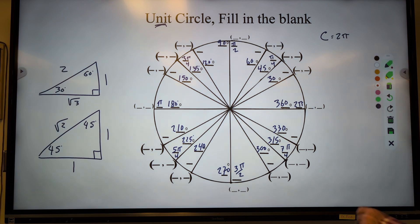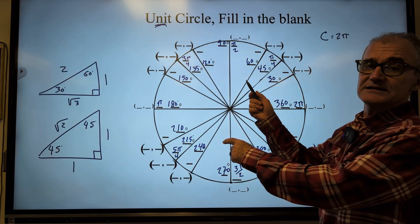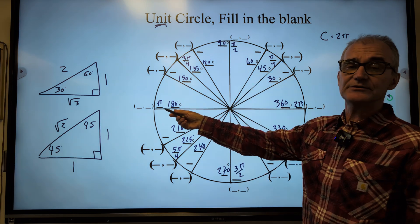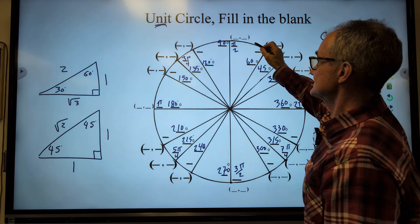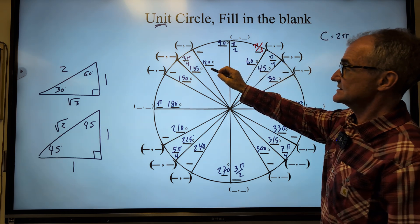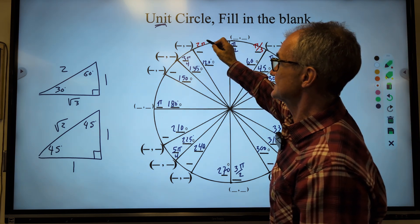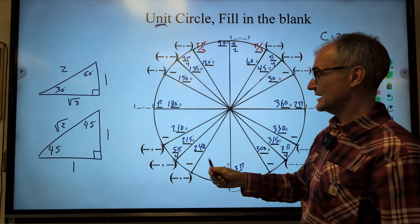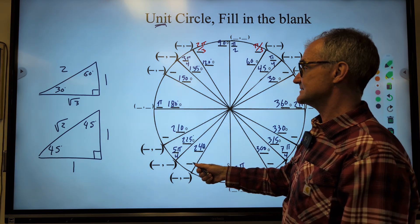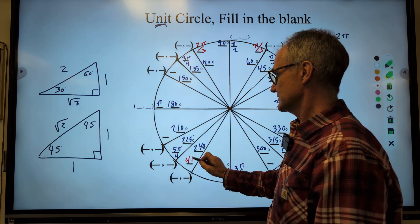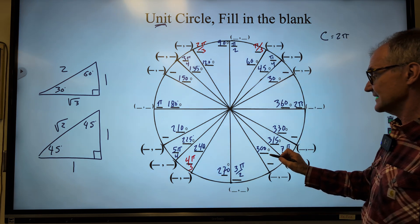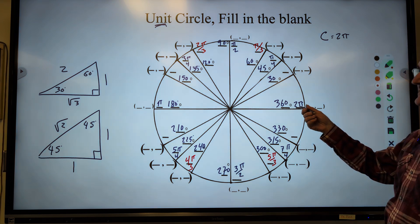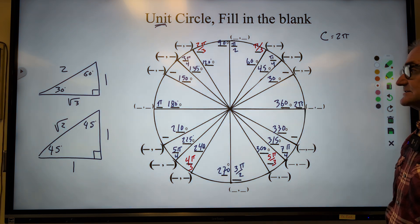Next I'm going to do my 60s. 60 into 180 is 3. So 60 is going to be 1 third of the way here. So this is 1 third. This 60 right here will be 2 thirds, 2 pi over 3, and then 3 thirds reduces to pi. Down here is my next 60. 4 thirds, 5 thirds, and then 6 thirds reduces to 2 pi.